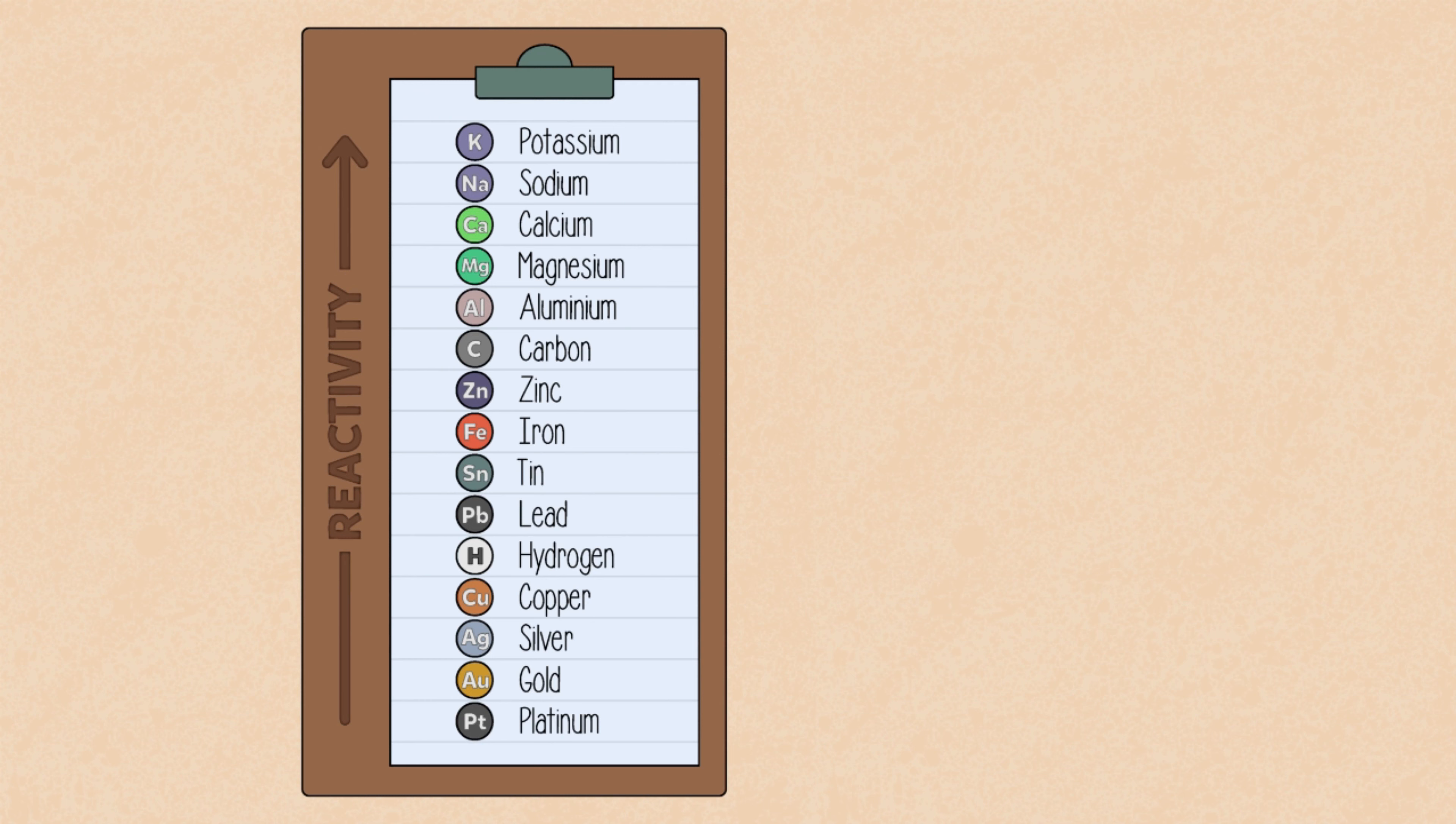In summary, the reactivity series ranks metals according to their reactivity and can be used to predict whether or not a reaction will happen.